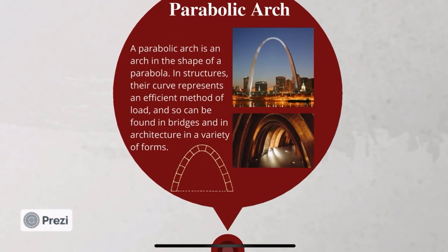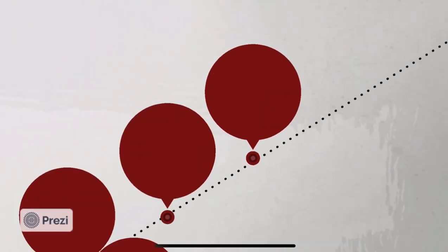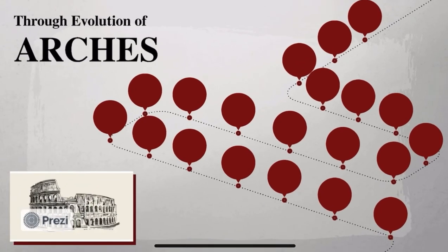We also have the parabolic arch — it is an arch in the shape of a parabola. In these structures, the curve represents an efficient method of load distribution and can be found in bridges and in architecture in a variety of forms. That is all about how arches evolved through all these years. Thank you.